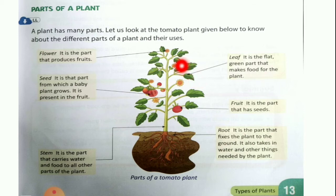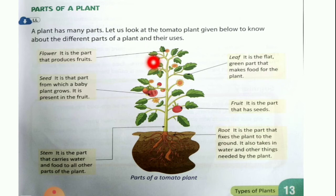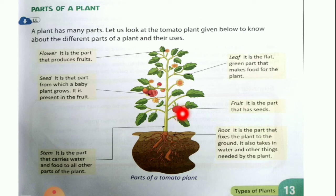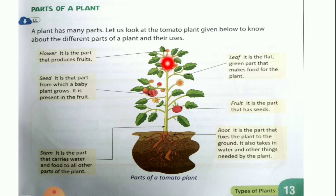The first part is flower. Here you can see there is a small tomato flower — it is the part that produces fruits. When a tomato plant has a flower, that flower will become a fruit. You can see many different types of plants which have flowers, and after that the flower becomes a fruit.